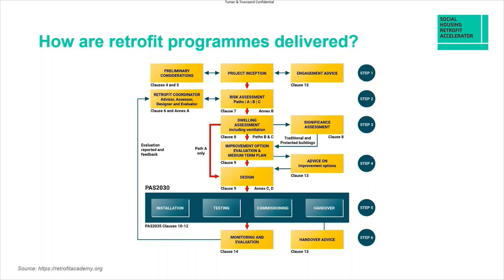Step two is identifying the risk rating of the property, falling into A, B or C from low to high risk. The risk assessment comprises five criteria: the number of homes in the project, the number of measures per home, the inherent technical risk of individual measures, the highest risk combination measure, and the principle of construction. Step three is undertaking a dwelling assessment, generally commissioned by the retrofit coordinator. Each dwelling must be assessed with a report available to present findings to the building owner — including recommended measures, energy advice, and carbon and cost savings. This needs to be signed off by the retrofit coordinator to ensure compliance under the PAS 2035 criteria.